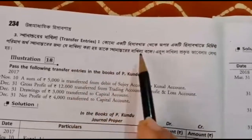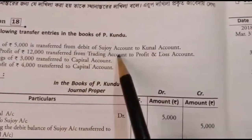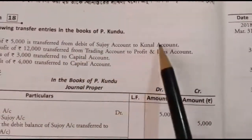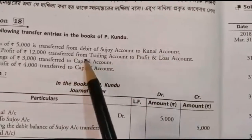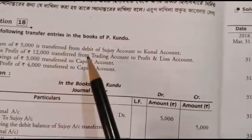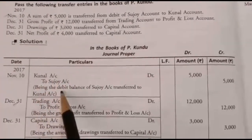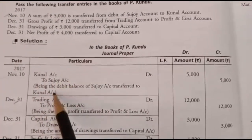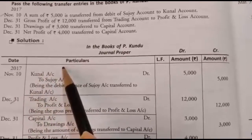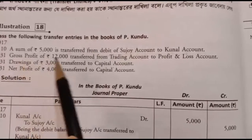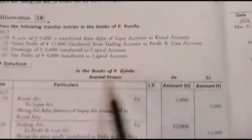This is the transfer entries. This is a sum of Rs. 5,000 transferred as a debit to the account. If you put debit to the account, you transfer from debit to the account. Gross profit of 12,000 is transferred from the trading account to the profit and loss account.